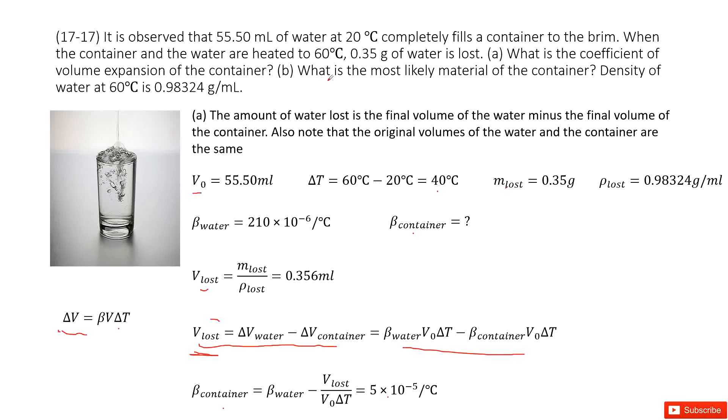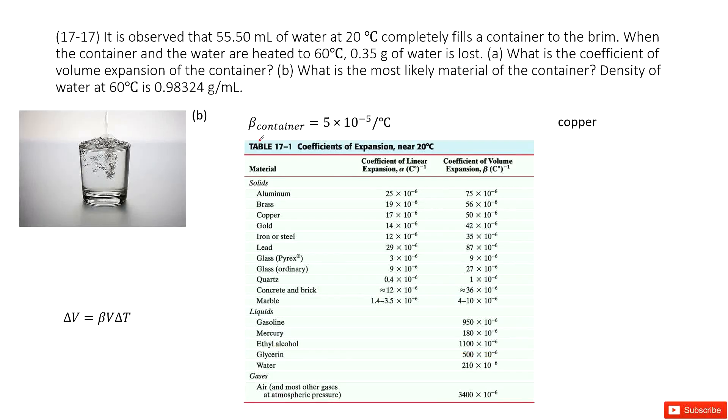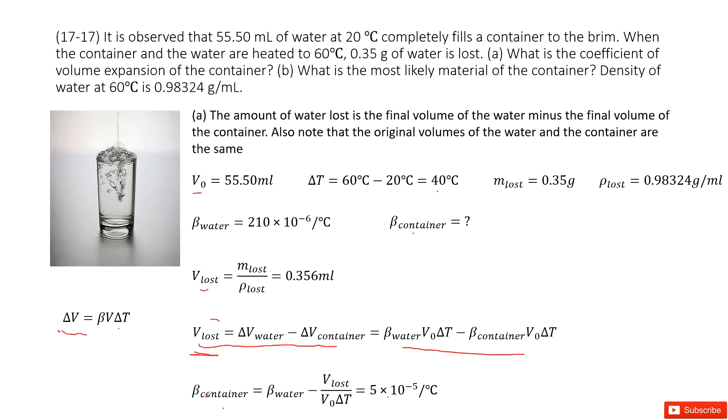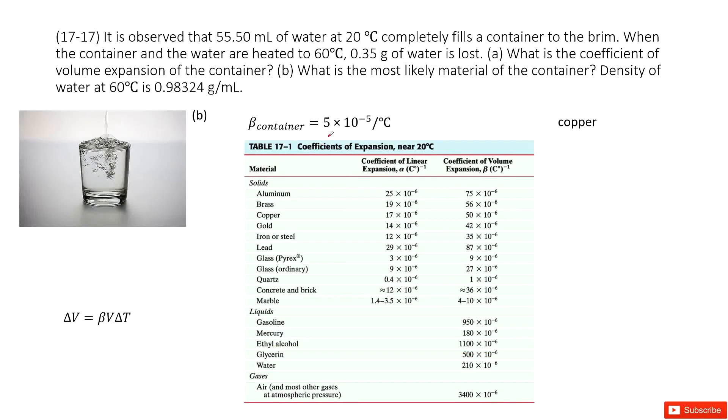The second part asks what is the most likely material of the container. We can see in the previous part we found beta container. This is the coefficient for expansion. Then we look at the table in our textbook. So which one is close to this one?